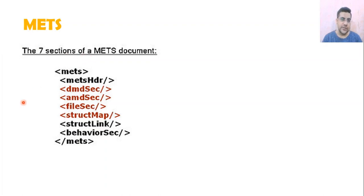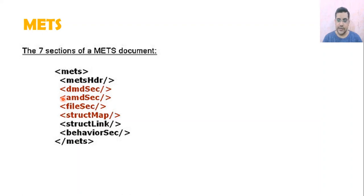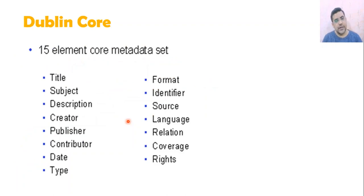In METS we have seven sections. You can see this is just to clarify the concept: a header, then we write the file structure, link information, behavior, and so on. Here is a sample file — a music folder example — showing the title written as 'Music Folder', created by Chris as the creator, with the subject being music.